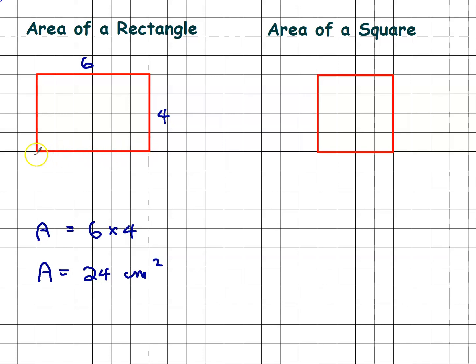And of course, this dimension on a rectangle is called the length, that dimension is called the width. And that gives you the formula for the area of a rectangle, length times width.